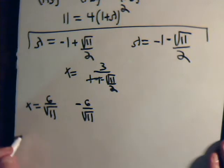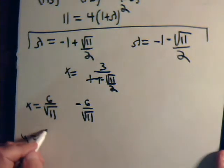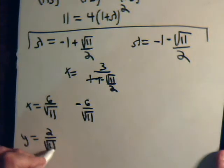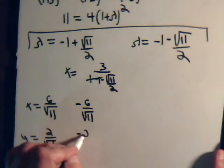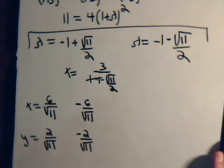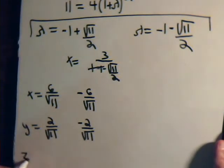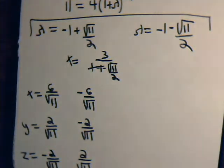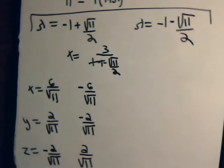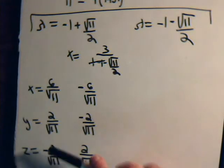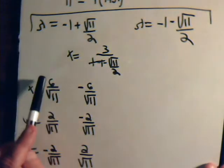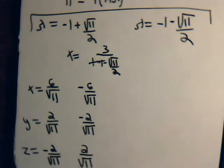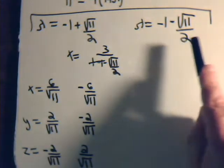Using these values for lambda to determine y and z, we get: y equals 2 divided by the square root of 11, and y equals negative 2 divided by the square root of 11. So we have one set of critical numbers and a second set of critical numbers, each obtained from one of the two lambda values.